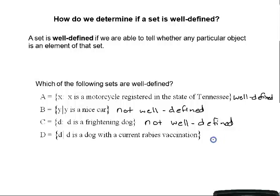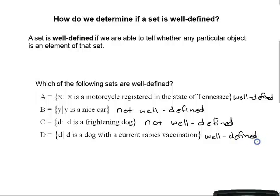Set C is the set of all D such that D is a frightening dog — again, not well defined, because a dog I find frightening you might not find frightening at all, and vice versa. Set D is the set of all D such that D is a dog with a current rabies vaccination — this is a well-defined set, because dogs with current rabies vaccinations are on record at the appropriate office.